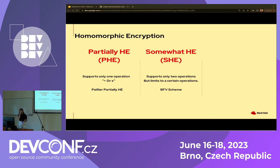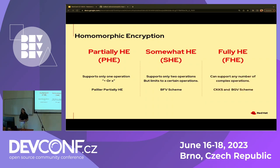Then comes somewhat HE, which came up with more advanced abilities. It supports only two operations but with more depth — you can perform algebraic equations, and the BFV scheme is one of the things that comes under somewhat HE. And then comes fully HE. As of now, most researchers and companies are using fully homomorphic encryption. It can allow you to perform any number of complex operations — any depth, exponentials, matrix multiplication — and you can perform it all using fully homomorphic encryption.